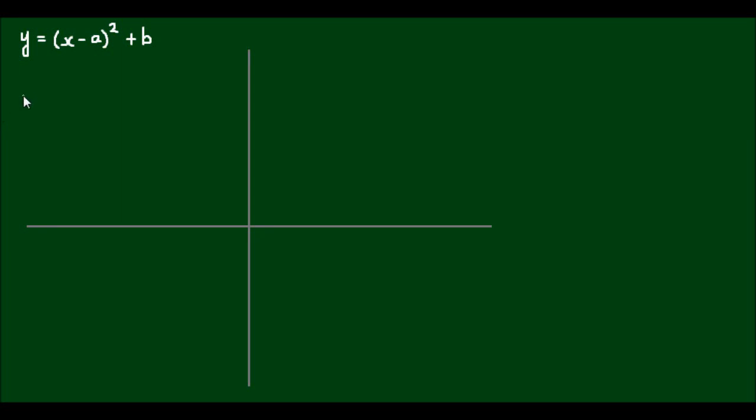Hello and welcome. In the previous video, we found that the conic form of a parabola can be expressed as (x - a)² is equal to 4p times (y - b).